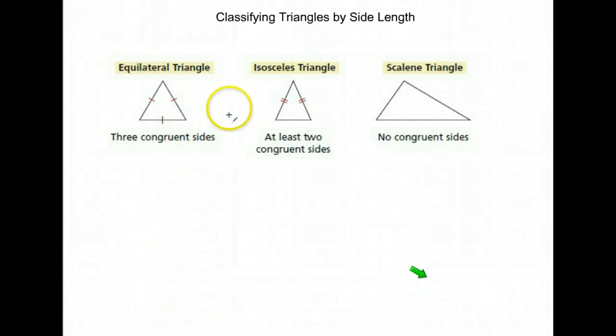The other way we can classify triangles is by the lengths of their sides. We talked about angles, and remember angle measure is the degree of angles, the opening in each corner. This time we're going to classify by side length, the distance from one corner to the other, or the length of a side.